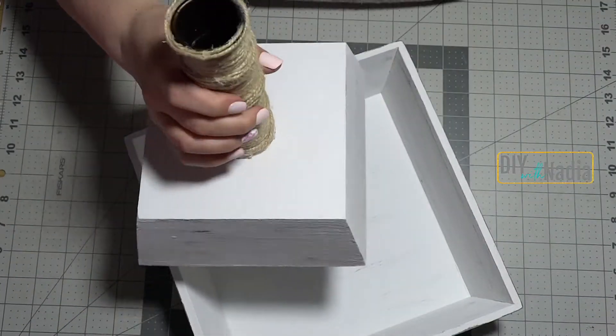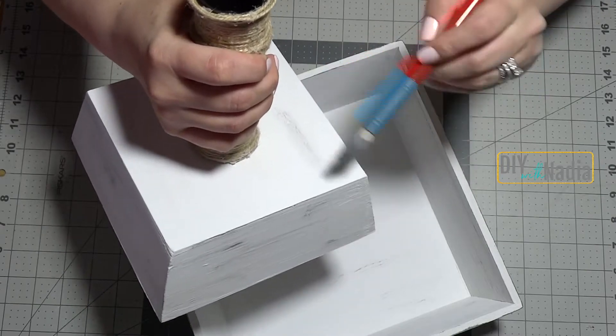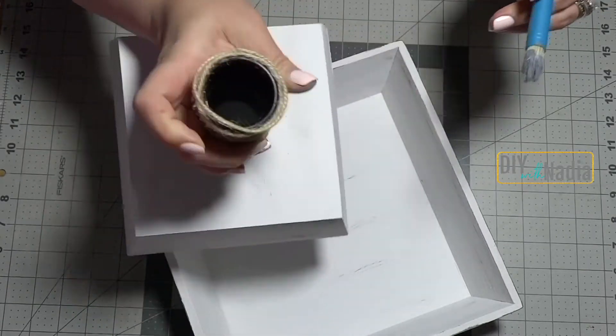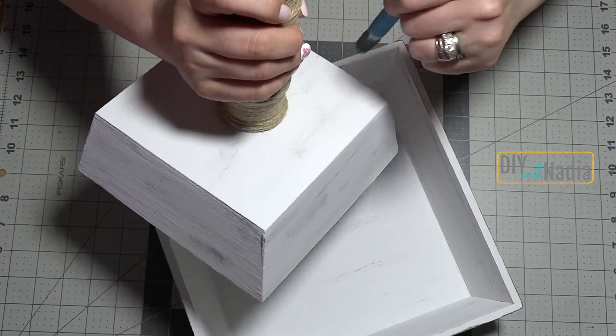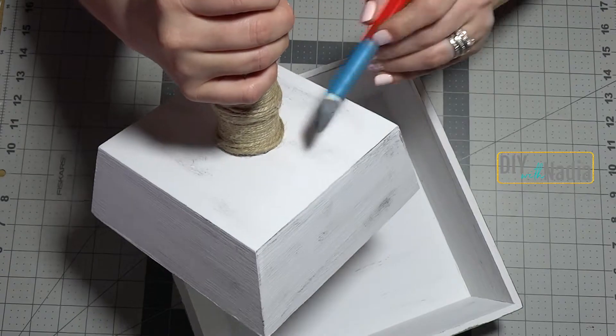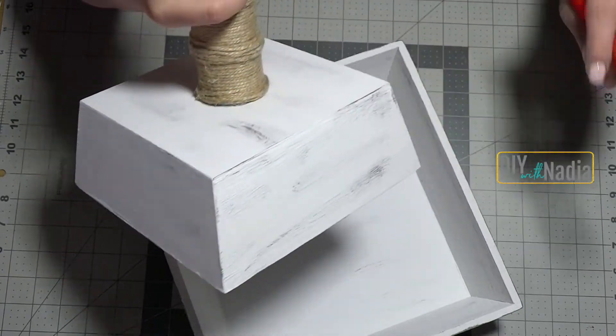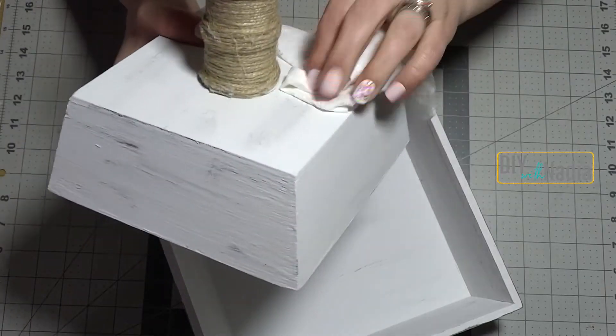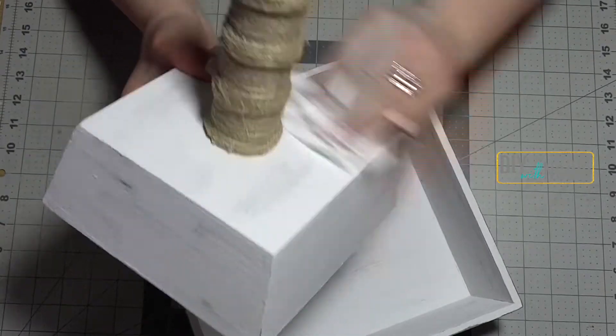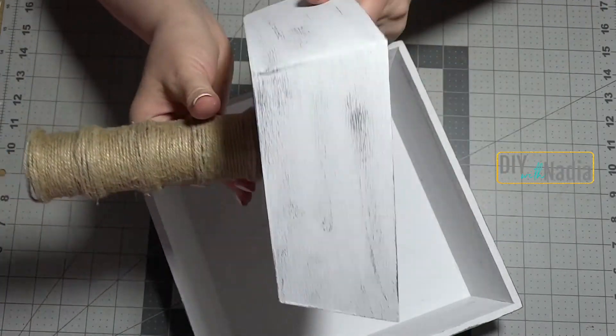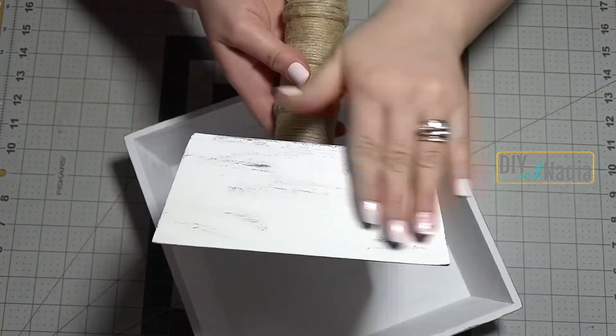Then, you know what, since why not I'm going to do the bottom. I'm going with the grain when I do these. I always paint with the grain when it comes to wood, so I'm dry brushing with the grain so there's consistency to it and it doesn't look off-putting.